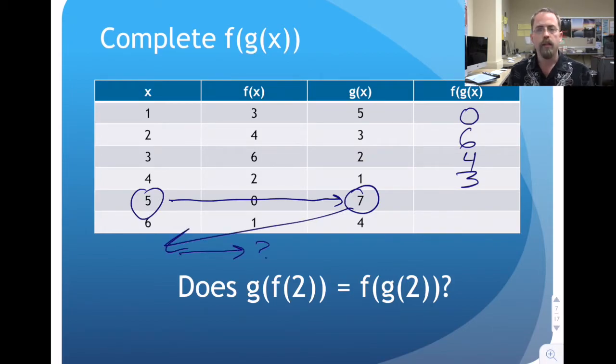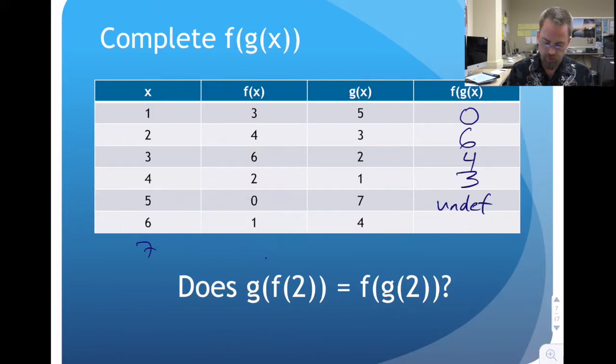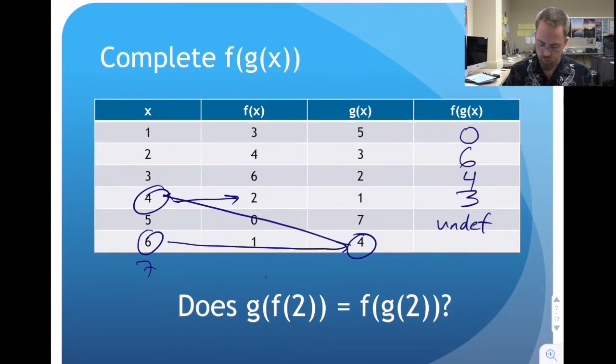We can't plug 7 into f. That is not available for us to do. So here we have to have an undefined value. Last one, just to finish out the table. We take 6, plug it into g, we get 4. We take 4, plug it into f, we get 2.